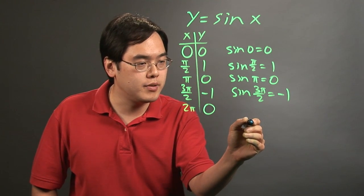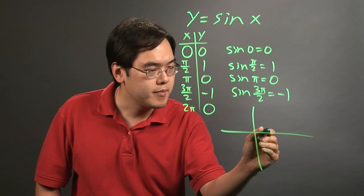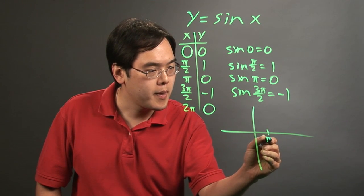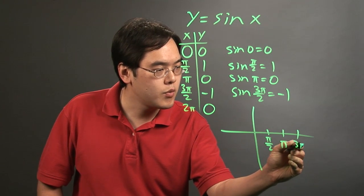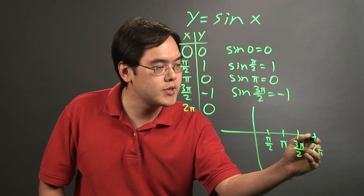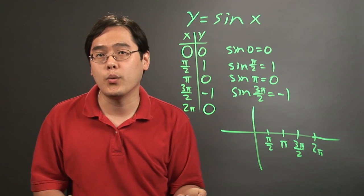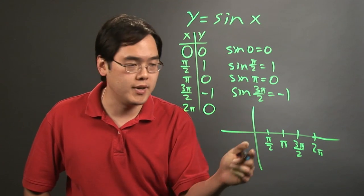In terms of plotting it, think about it this way. Make ticks for pi over 2, pi, 3pi over 2, and 2pi. Keep in mind that the sine waves, as well as cosine waves, they keep on going. So this just represents one sample of it.